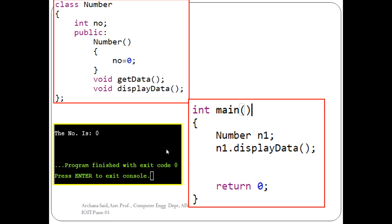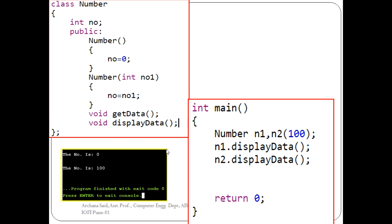Member variables can be public, private, or protected. The next type is the parameterized constructor. Its prototype is the class name followed by parentheses containing the parameter you want to initialize. Suppose 'n2' is the object name and 100 is the constant value passed. This value is passed to parameter 'no1', which is then assigned to member variable 'no'. Because of n1.display and n2.display, two values are printed as output.